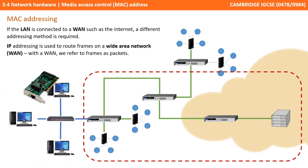If the LAN is connected to a WAN such as the Internet, a different addressing method is required. IP addressing is used to route frames on a wide area network, and in this situation we refer to them as packets.